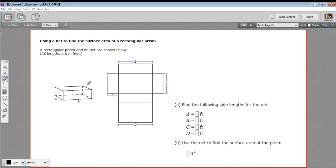In this problem, we're being asked to find the surface area of this rectangular prism here, and we're being given a net.